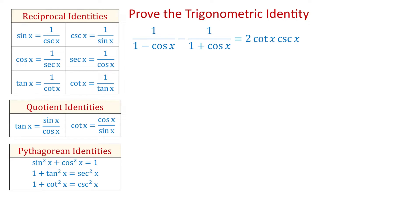Hello. In this video, we will prove the trigonometric identity: 1 over 1 minus cosine of x, minus 1 over 1 plus cosine of x, equals cotangent of x times cosecant of x.